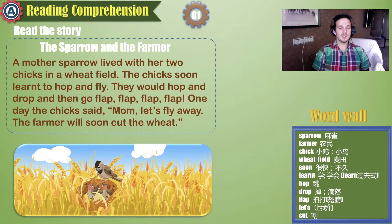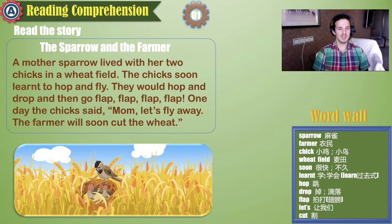A mother sparrow lived with her two chicks in a wheat field. The chicks soon learned to hop and fly. They would hop and drop and then go flap, flap, flap, flap. One day the chick said, mom, let's fly away. The farmer will soon cut the wheat.